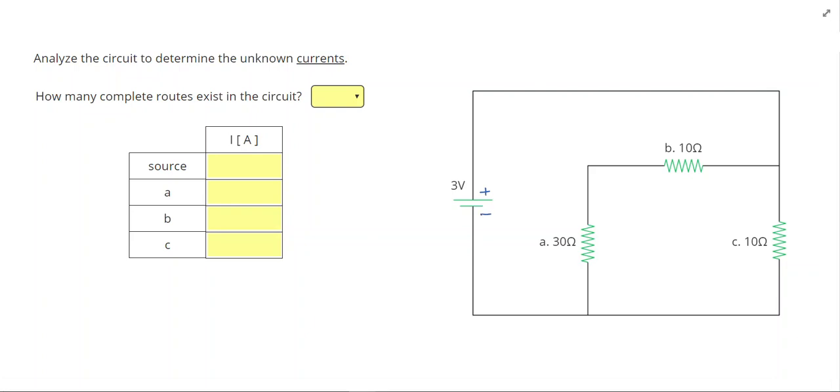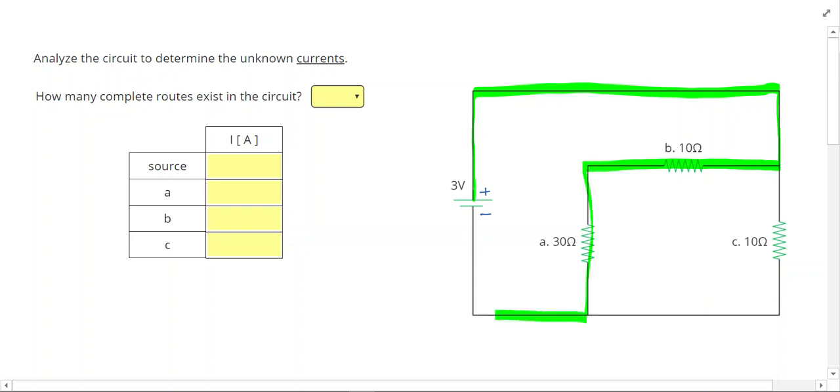Let's highlight a route that goes from positive to negative. Current flows out of the positive end of the battery, splits at this intersection, and some can go through B and A.